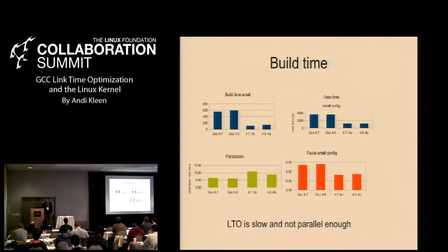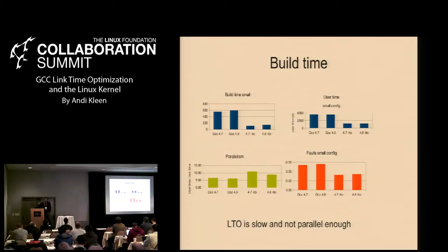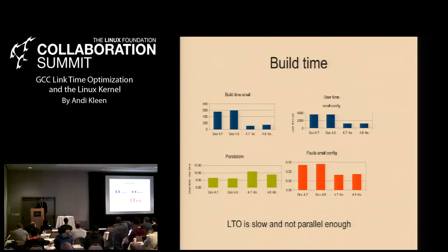Build time is definitely slower with LTO — more than 4 to 5 times slower for a small config. LTO builds are also much less parallel than non-LTO builds. Parallelism here is user time divided by real time, and LTO is a lot less parallel. It also has significantly more memory consumption, with a lot more minor page faults. GCC 4.8 is slightly slower than 4.7 but not by very much.